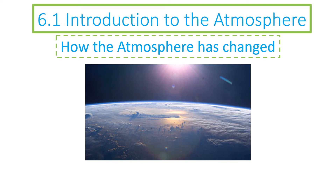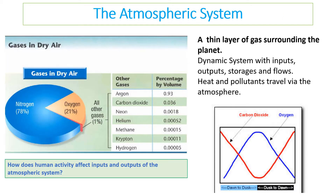Welcome to this ESS revision video for 6.1, Introduction to the Atmosphere. Today we're looking at how the atmosphere has changed and looking at climate change. You need to understand what the atmosphere actually is, what it's made up of, and the approximate percentages of gases in it. First of all, the atmosphere is a thin layer of gas that surrounds the planet.